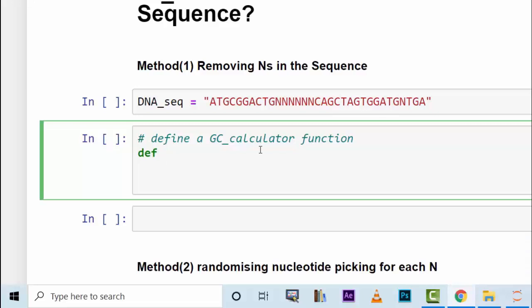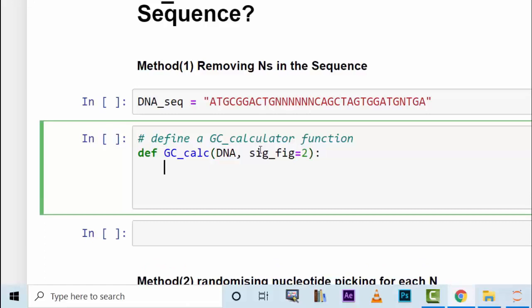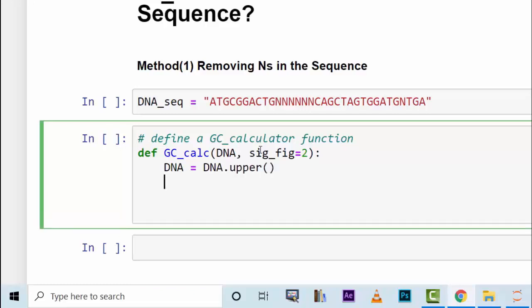So we define GC_calc with DNA and significant figures like in the previous tutorial, but we set it as default. The first thing to do here is to replace the DNA from small characters to uppercase characters. So we update the DNA first. We say DNA equals DNA.upper. This changes every occurrence of lowercase DNA sequence nucleotides to uppercase if any is found in your DNA sequence.